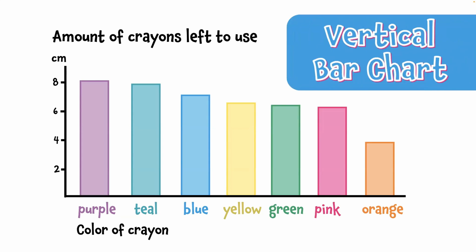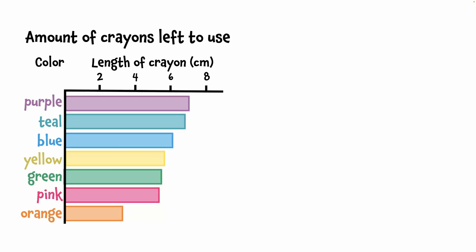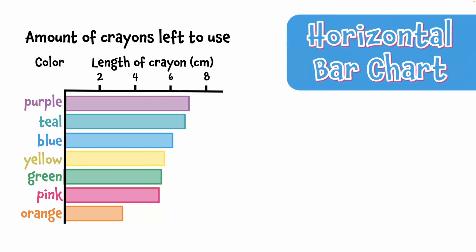For another variety, imagine flipping this graph on its side, so that the purple's at the top and the orange is at the bottom. That would look like this. When the bars go sideways, that's called a horizontal bar chart.